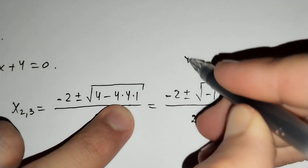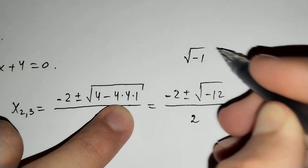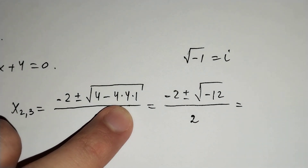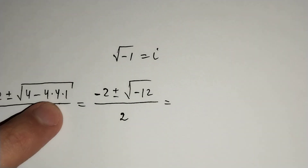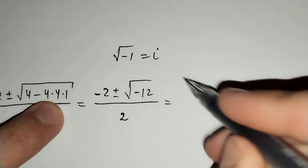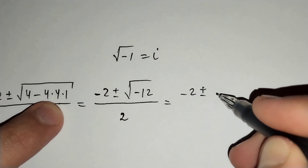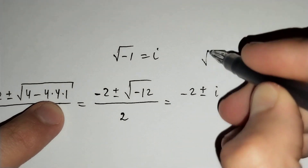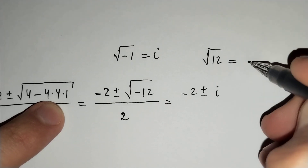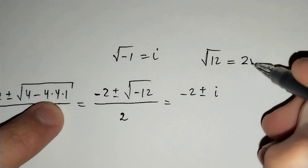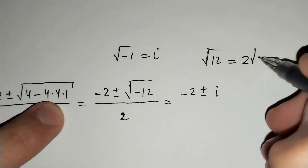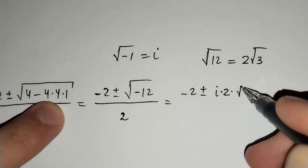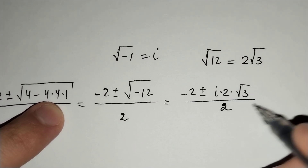We know that the square root of minus 1 equals to i, so this equals to minus 2 plus or minus i times the square root of 12, where the square root of 12 equals to 2 times the square root of 3, all over 2.